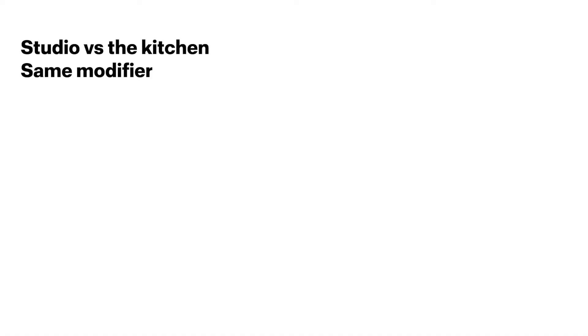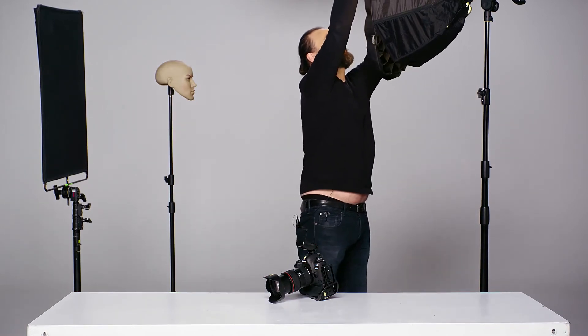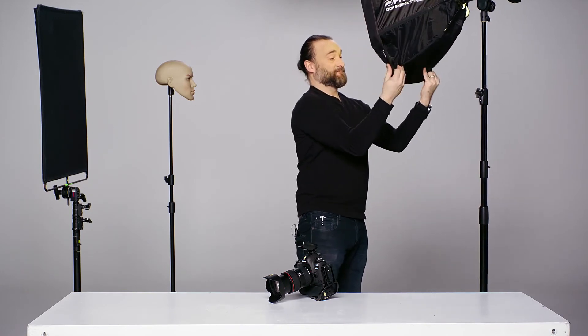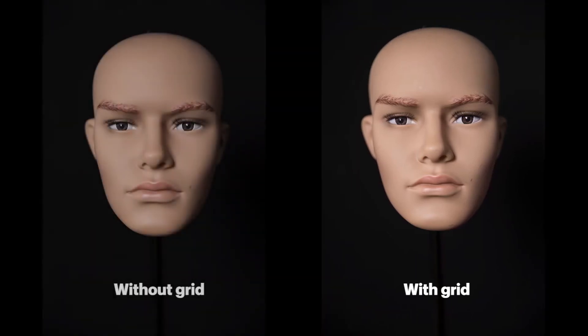Let's try this in another environment — the big studio. First, let's take the image without the grid, and now with the grid. As you can see, the contrast is quite the same. This is because the walls and ceiling are so far away, so the key to contrast is what the light pattern lights up. A small environment gives you bright shadows if you have a big light pattern, and if you have a small light pattern, you get darker shadows. The combination of light pattern and environment controls the contrast.